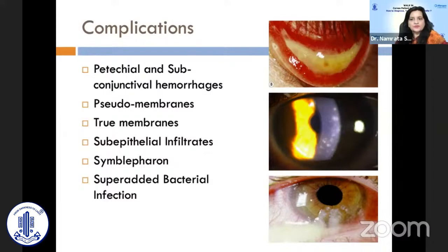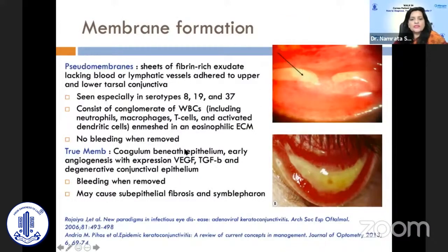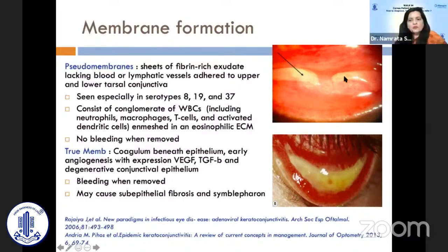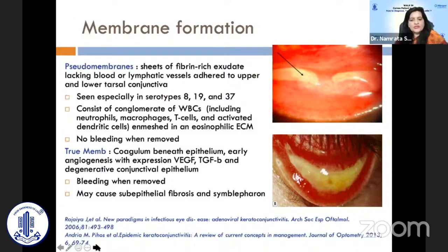We must differentiate between pseudomembranes and true membranes. Pseudomembranes are sheets of fibrin-rich exudate with no blood or lymphatic vessels, consisting of a conglomerate of WBCs, macrophages, etc. When removed, there is no bleeding — hence 'pseudo.' True membranes, by contrast, involve a coagulum beneath the epithelium with early angiogenesis; when removed, there is bleeding, which may cause sub-epithelial fibrosis and symblepharon formation.